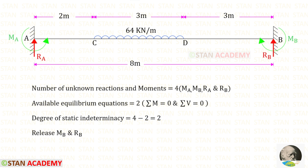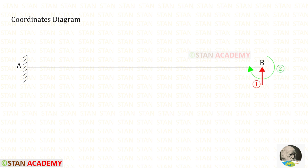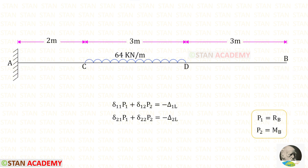To make this beam statically determinate, from point B we release MB and RB. Point B then becomes a free end, so the beam changes from a fixed beam to a cantilever beam. Now let us make the coordinates diagram, keeping the vertical reaction RB as the first coordinate and moment MB as the second coordinate. Using two equations, we have to find RB and MB.